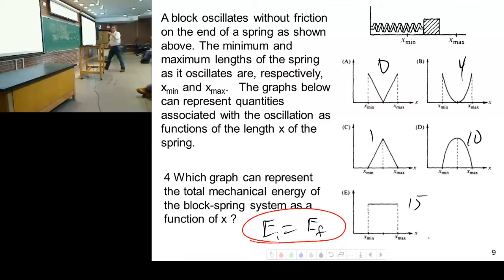Which graph shows me constant? Energy versus X. Total energy versus X. This one here says it's really high, then goes to zero. This one does the same thing. This one goes zero, high, zero.